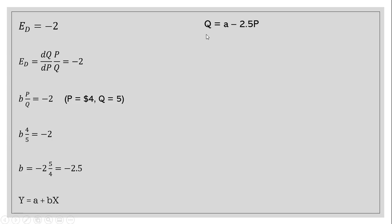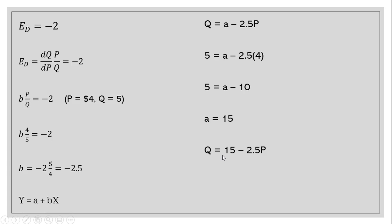Plugging into the linear demand equation, Q is our Y and P is our X. We don't know the constant A yet, but we know the parameter in front of P is minus 2.5. We also know one combination: Q equals 5 when P equals 4, at the profit maximizing price and quantity. Plugging in $4 for price and 5 for quantity, we solve for A and get A equals 15. So the market demand curve is Q equals 15 minus 2.5P. Solving for the inverse market demand gives P equals 6 minus 0.4Q.